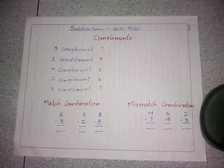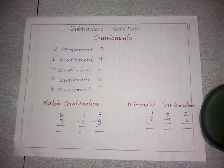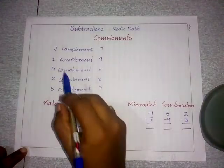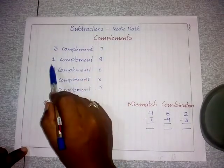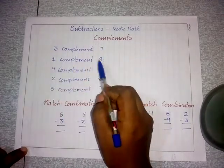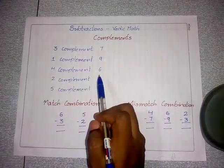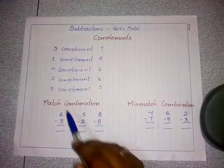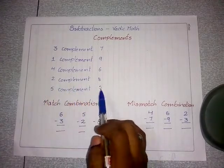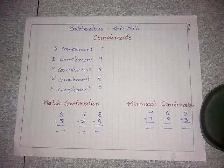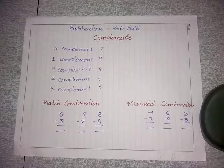So 6 is the complement for 4, because 6 plus 4 equals 10. Here are other complements: 3 is complement to 7 and 7 is complement to 3; 1 is complement to 9 and 9 is complement to 1; 4 is complement to 6 and 6 is complement to 4; 2 is complement to 8 and 8 is complement to 2; 5 is complement to 5.